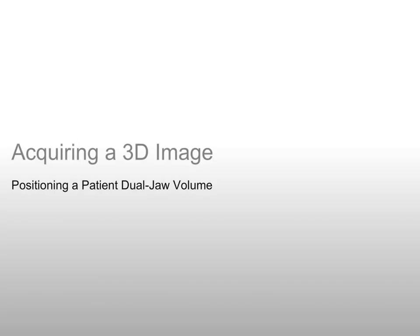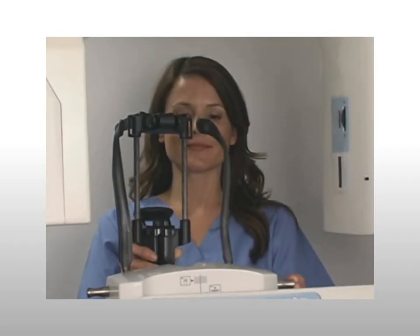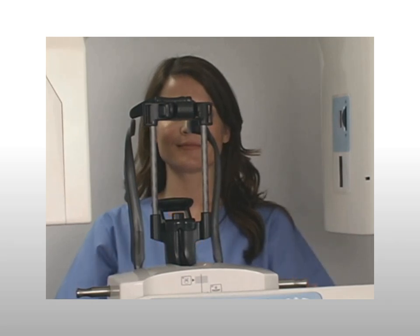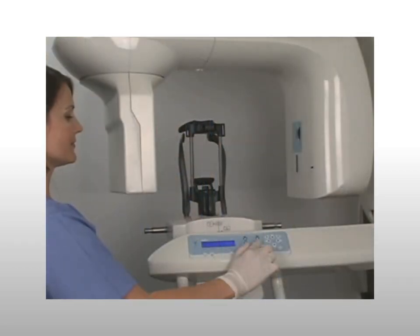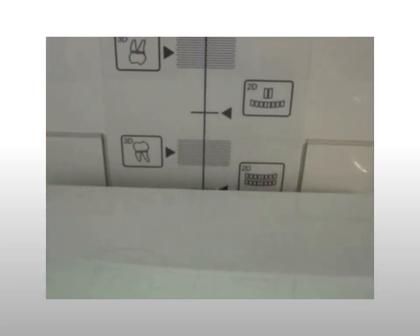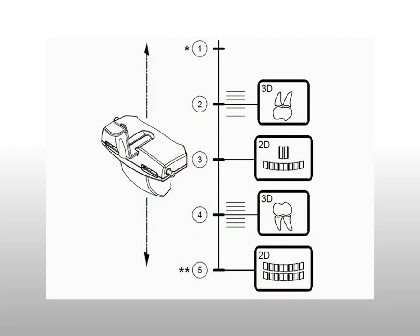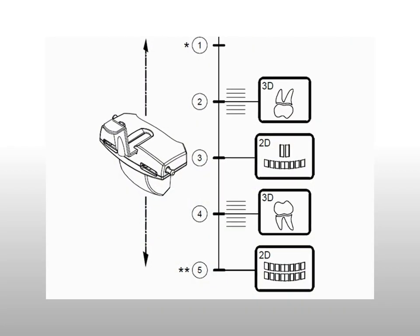Acquiring a 3D image: positioning a patient. Next, we will position a patient for a dual jaw volume. Insert the head support into the chin rest block — a click indicates it is locked into position. The head support is recommended for larger field of view exams. Use the 3D head adjustment button to adjust the chin rest according to the desired exam type, using the chin rest base positioning indicators as a guide.